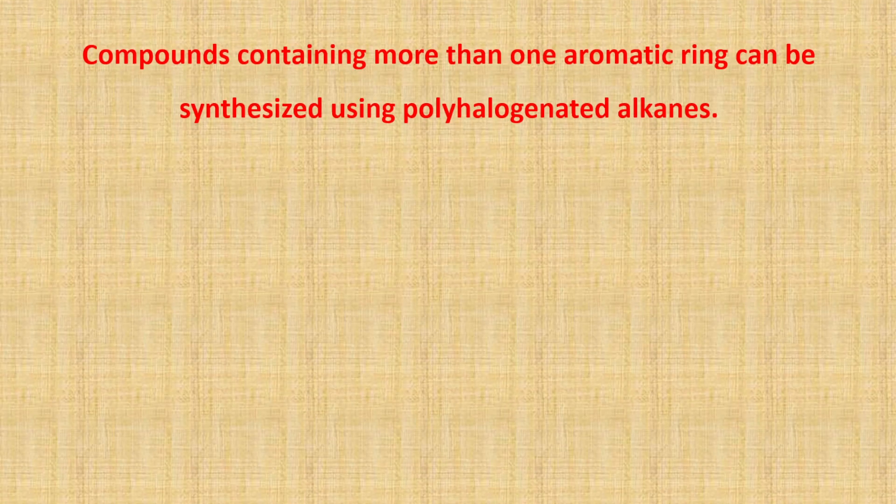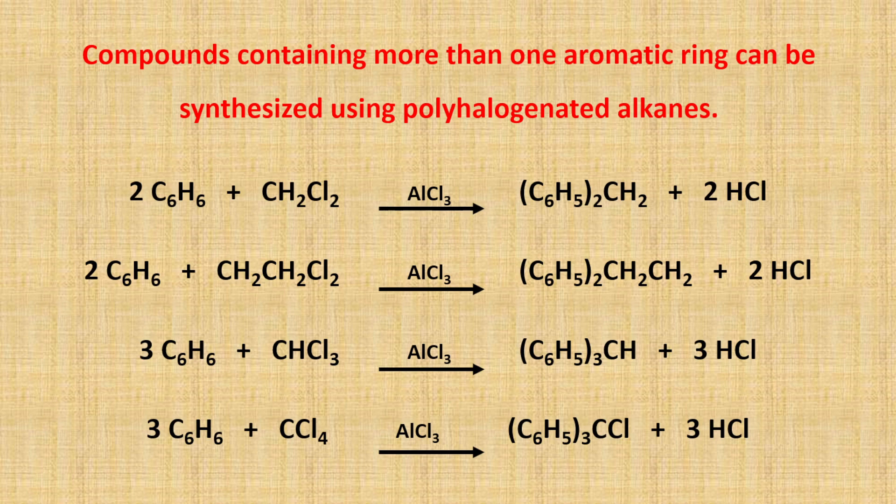We can also synthesize organic compounds containing more than one aromatic ring using polyhalogenated alkanes. For example, if you use dichloromethane or dichloroethane, you can prepare a two aromatic ring-based organic compound. And if you use chloroform or carbon tetrachloride, you can prepare a three aromatic ring-based organic compound using Friedel-Crafts alkylation.